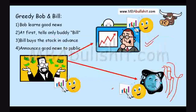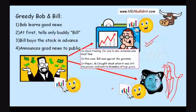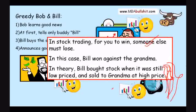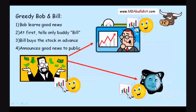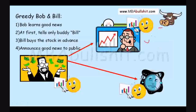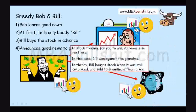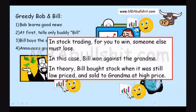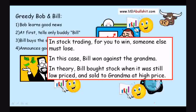You might say, why doesn't grandma earn money? The stock price still went up. Well, in theory, in stock trading, for you to win, someone else has to lose — because Bill buys the stock cheap and then sells it expensive. Who does he sell it expensive to? He sells it expensive to people like grandma, after the price has already gone up. So in stock trading, for you to win, someone else must lose. In this case, Bill won against grandma. Bill bought the stock when it was still low-priced before the announcement and then sold it to grandma at a high price after the announcement.